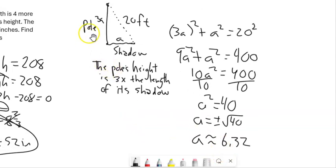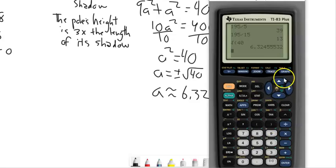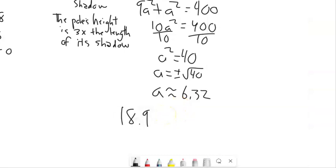But if I want the height of the pole, that's my A value, right? That's how long the shadow is. So I've got to multiply that by 3 to get the actual height of the pole. So take that, multiply it by 3, and get 18.97 about. So the pole is almost 19 feet tall.